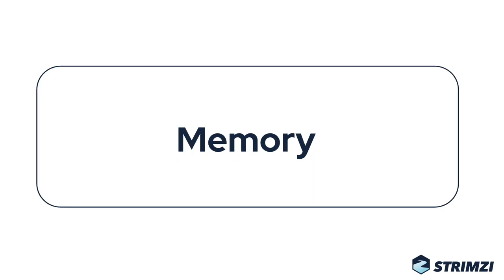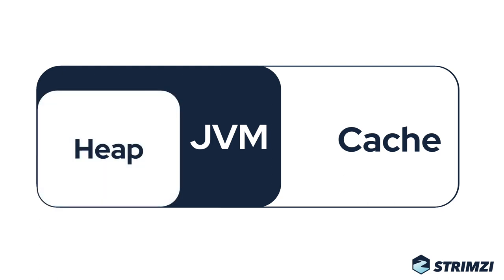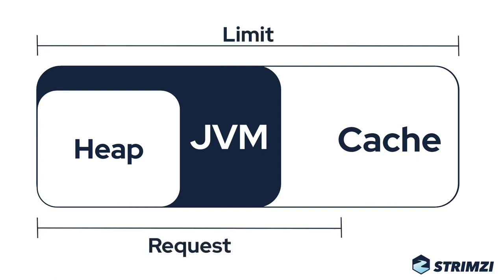With memory, it is a bit more complicated. Kafka is using memory for two different purposes. One part is used by the Java virtual machine. The other part is the operating system page cache, which Kafka relies on as well. A big part of the Java memory will be taken by the Java heap, but keep in mind that there is also other memory used by Java and by Kafka which is not part of the heap. When configuring the memory requests and limits, you should make sure that at least all of the Java memory fits into the requests.